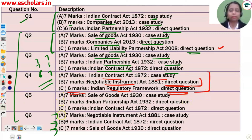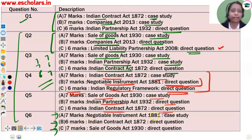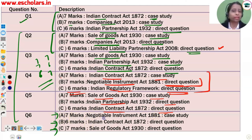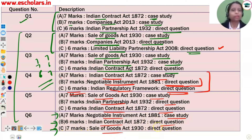Question 5: A, B, C — again 7, 7, 6 marks. A part is Sale of Goods Act, case-study based question. B part is Indian Partnership Act, direct question. C part is Indian Contract Act, direct question. Question 6: A part is Negotiable Instruments Act, case-study based. B part is Indian Contract Act, direct question.